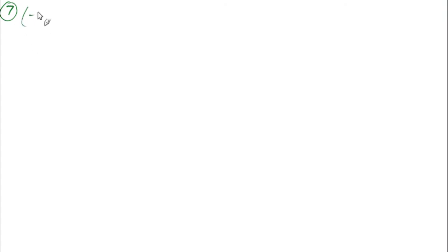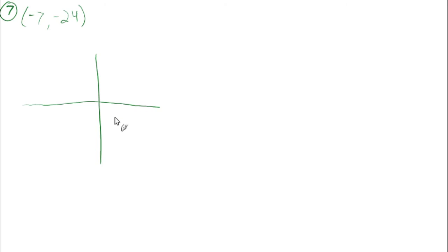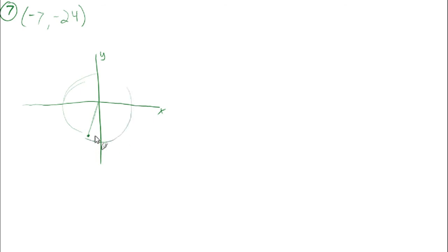We'll start with sample problem number 7. They're saying negative 7, negative 24 — that's a point on a circle, so it's on the XY coordinate plane. Negative 7, negative 24 would be kind of here. This is the point on the circle. What are the trig values for this angle?